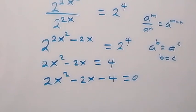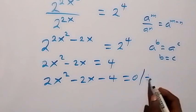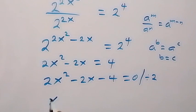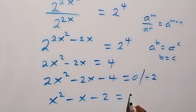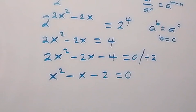This is a quadratic equation. We can simplify by dividing everything by 2, which reduces it to x squared minus x minus 2 equals 0. We can solve this by factorizing.